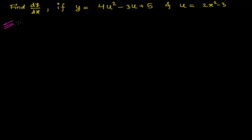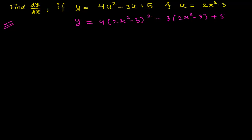In different books, the question may present this directly by substituting u — so instead of u squared you'd see (2x squared minus 3) whole squared, and similar substitutions throughout. You might also encounter very large powers, like 2x squared minus 3 to the power of 30 or even 100.